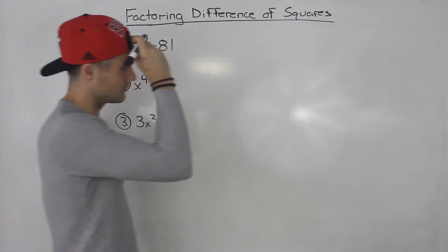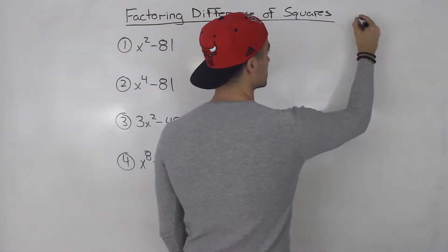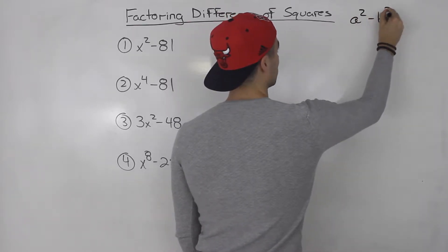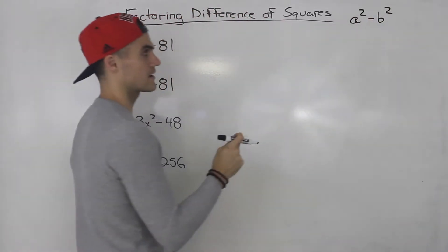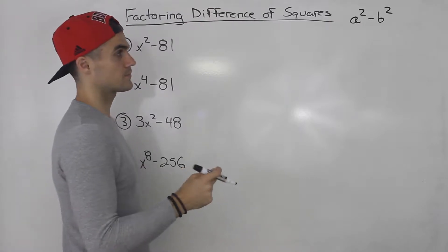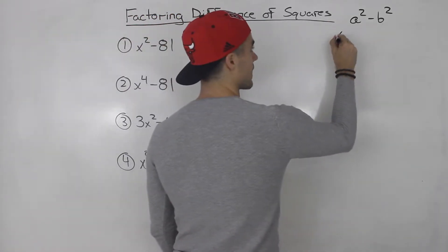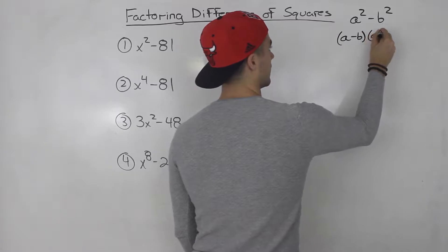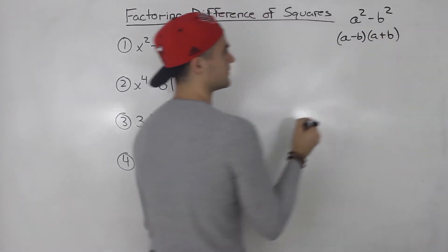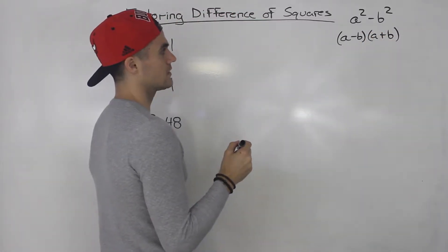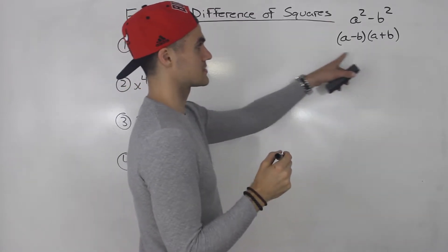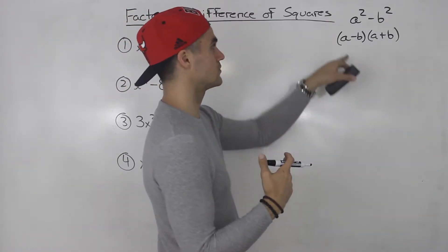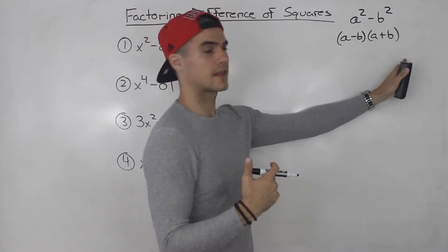Just to do a little review — if you remember, a difference of squares is generally when something is in this format: a squared minus b squared. And this will always factor to a minus b and a plus b. So if you were to expand this, basically the middle terms would cancel out and you would just be left with the first and last term.